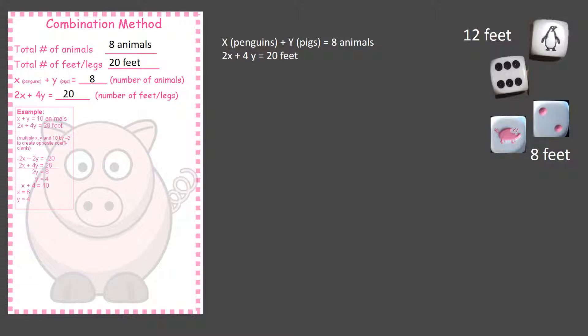X, which is penguins, plus Y pigs equals eight animals. 2X, or two penguins, plus four pigs, equals twenty feet. So now they're going to use the combination method.